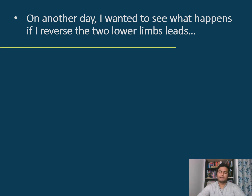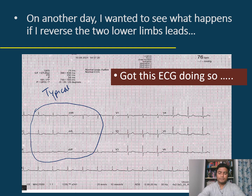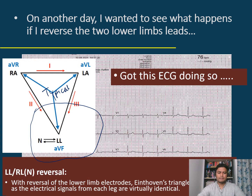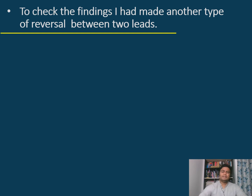On another occasion, I wanted to see what happens if I reverse the two other limb leads — the right leg and the left leg leads. I obtained this ECG by doing so. All limb leads appear typical or normal — there is actually no change when the right leg and left leg leads are switched. This can be explained by the Eindhoven triangle: if you reverse the neutral lead with the left leg lead, the Eindhoven triangle is preserved and the ECG is virtually normal. It makes no difference to ECG interpretation.